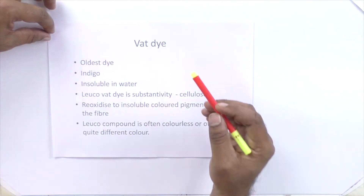Normally cellulosic fibers like cotton can be dyed with direct dyes, reactive dyes, VAT, Sulphur, Azoic and pigment dyes. In the last class we have seen direct dyes and reactive dyes, so today we will see VAT dyes.